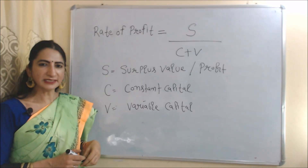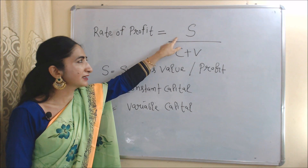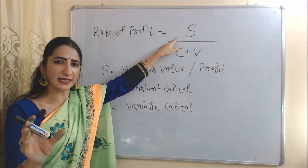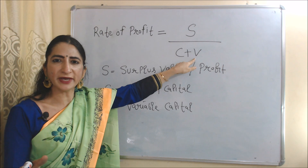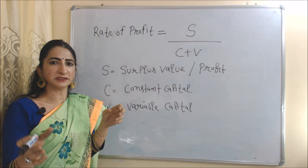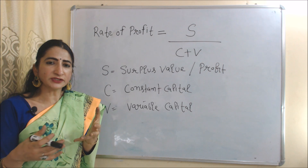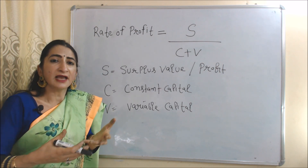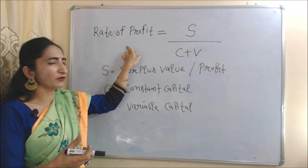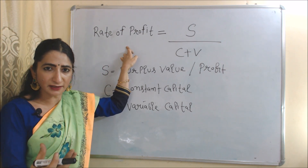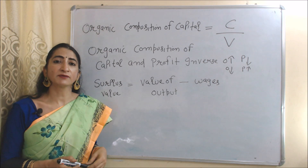The next concept is rate of profit. Rate of profit equals s over (c plus v), where s is surplus value or profit, and c plus v is total capital. This ratio mainly tells us how much surplus value — how much profit — we are earning compared to our expenditure on total capital. If our surplus value is more, then our rate of profit will be more.